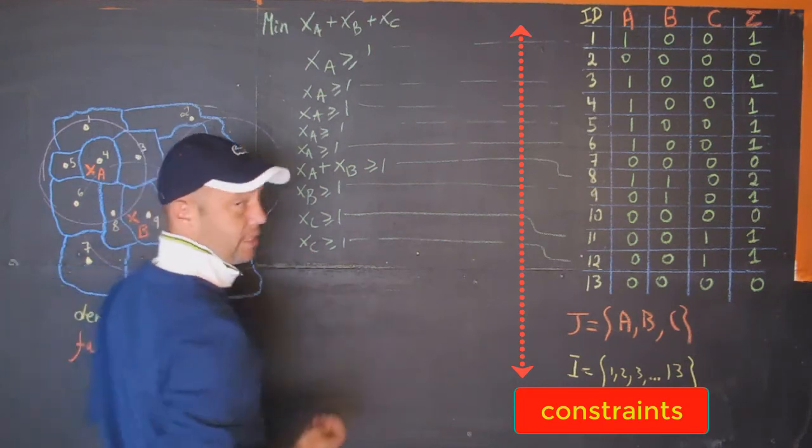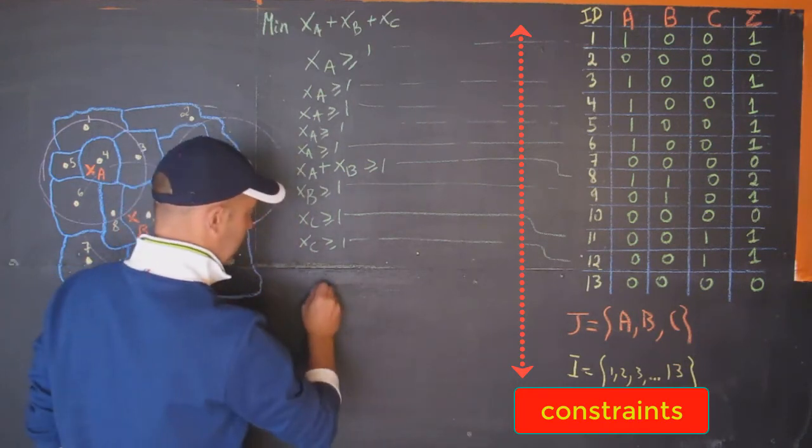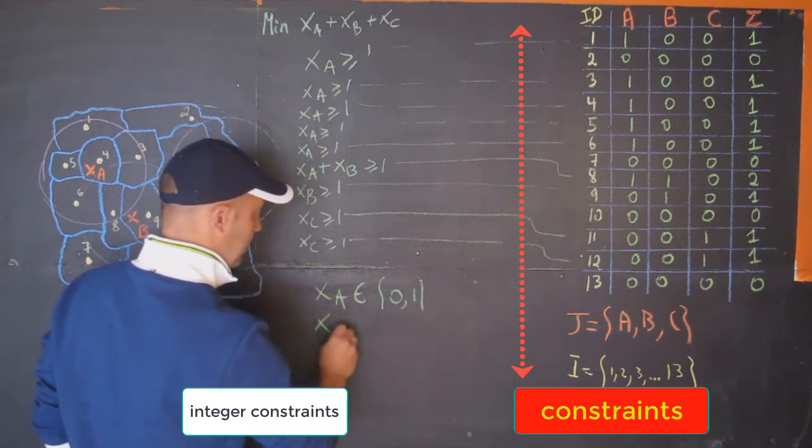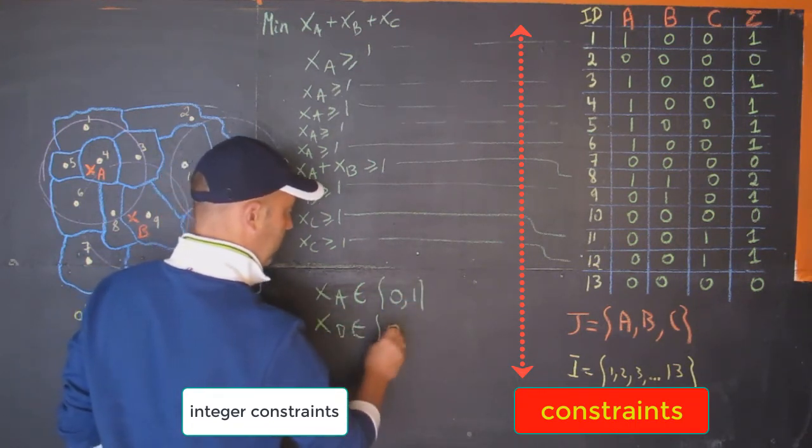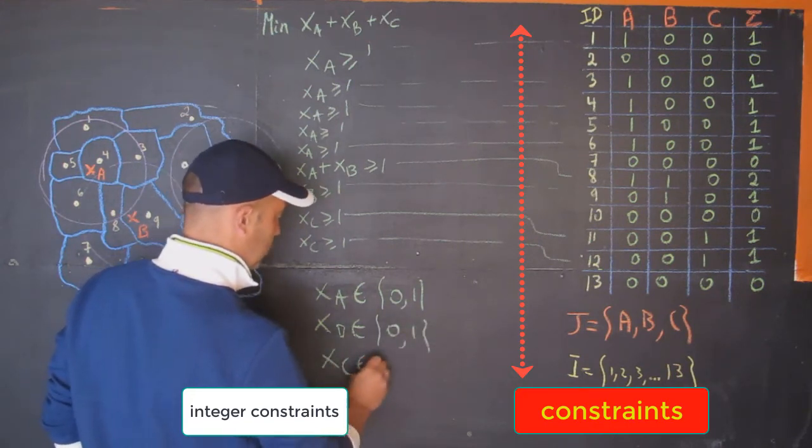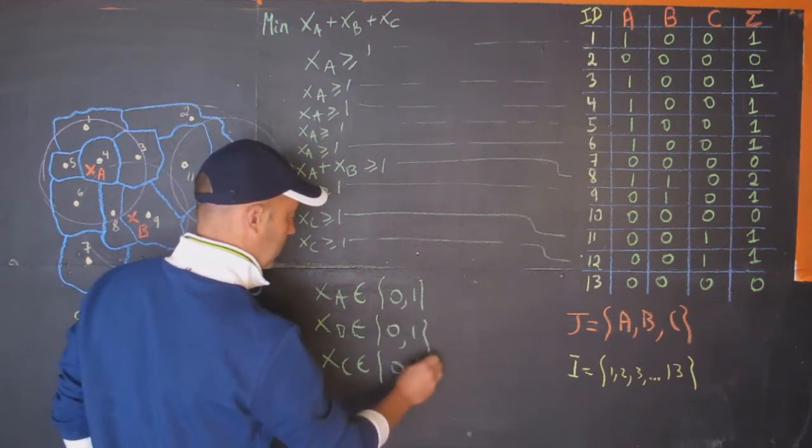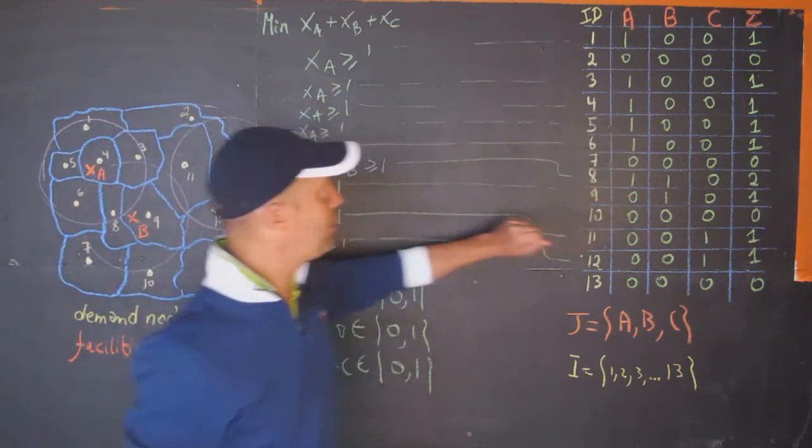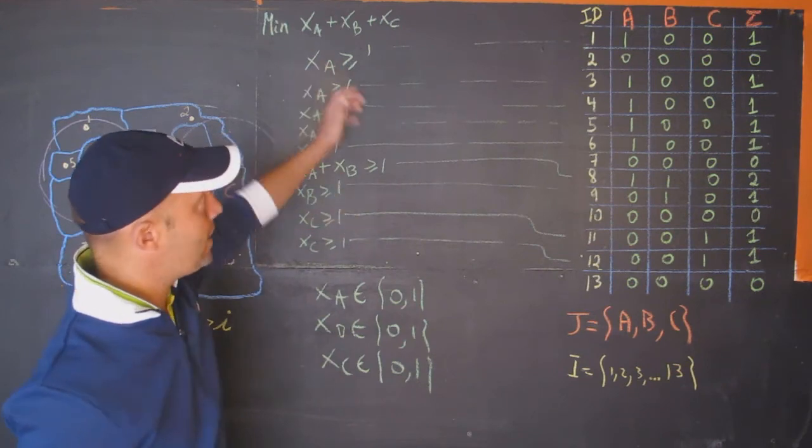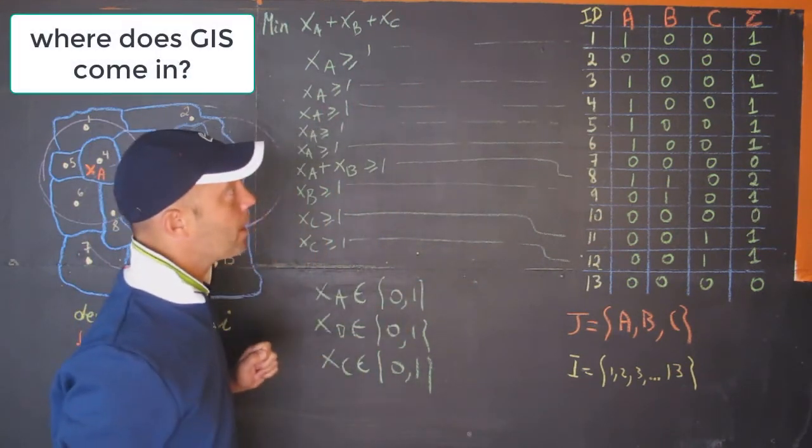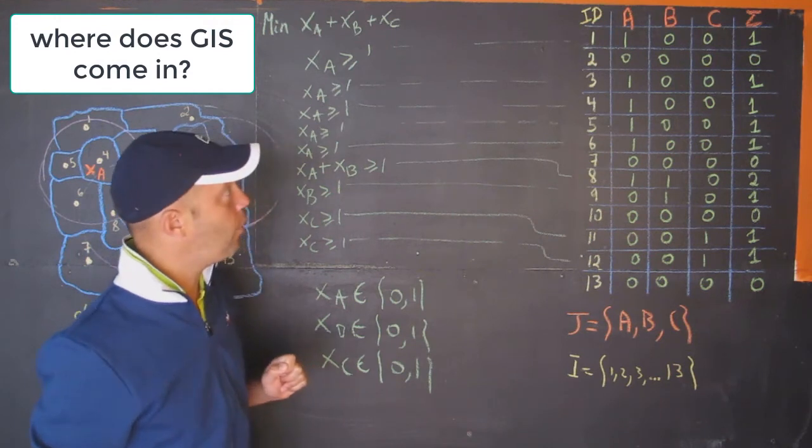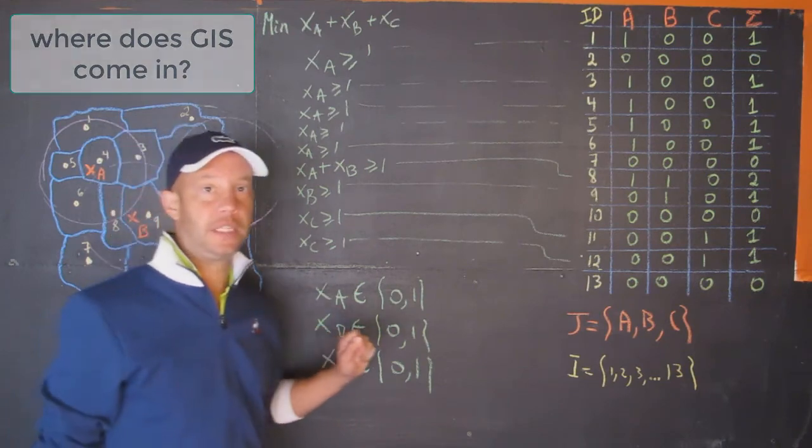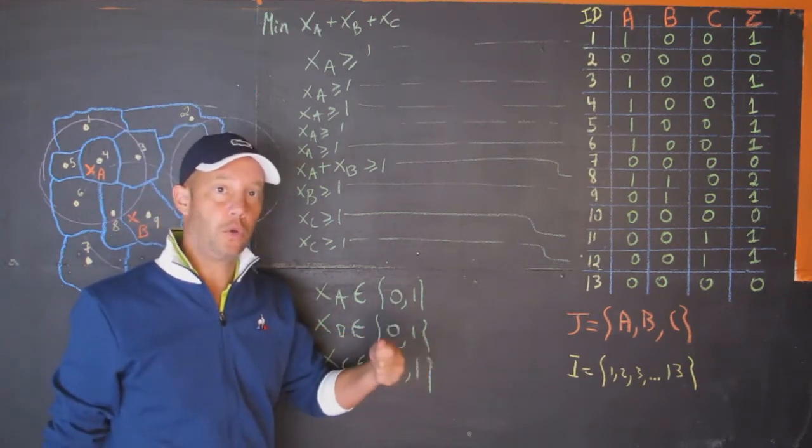Finally, we have all these integer constraints where we say that x_A belongs to {0,1}, x_B belongs to {0,1}, x_C belongs to {0,1}. This is essentially based on the coverage matrix that we had before. This coverage matrix can easily be determined or estimated within GIS. Now that we have this, we're going to see how we can solve this problem within CPLEX.